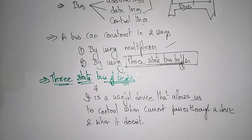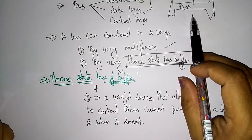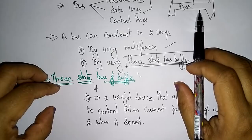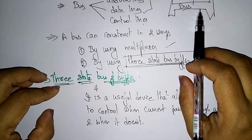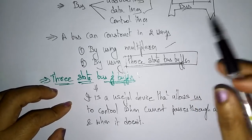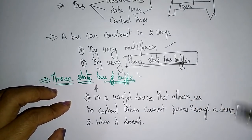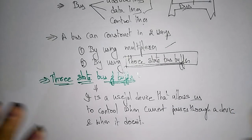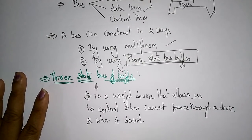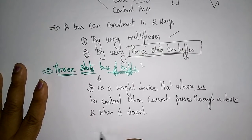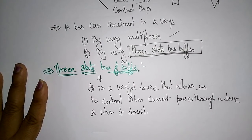Suppose at a time so many signals will pass to the bus — meaning so many devices are accessing the bus. The three-state bus buffer maintains control and allows when to pass the current and when not to. That is why we use a three-state buffer. We call it three-state because it has three states.